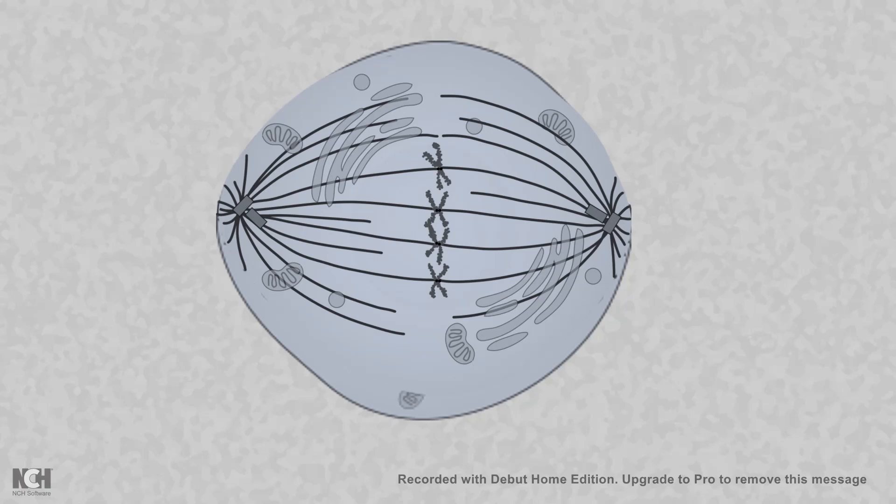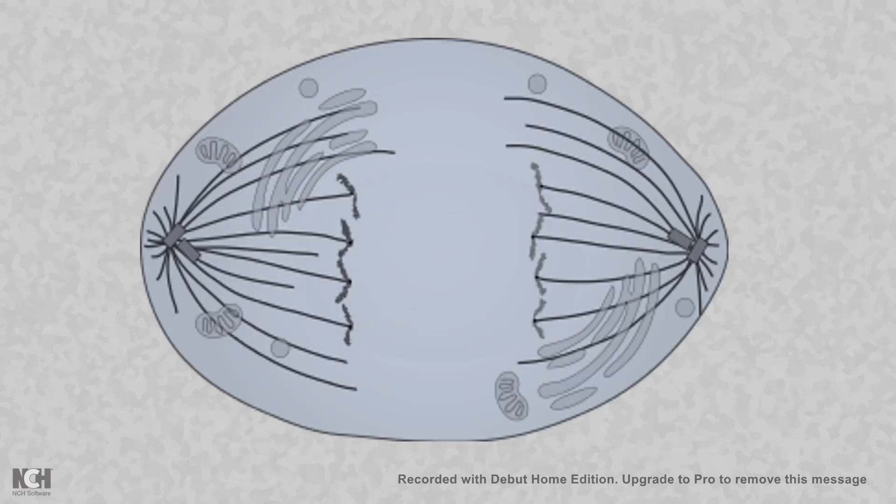It is time to pull them apart to both sides. If the segregation is proper, at the end of anaphase, both poles would receive equal amounts of genetic material and nuclear formation would start in telophase.